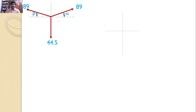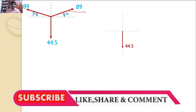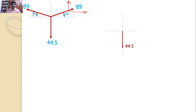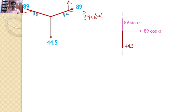You can also solve the same problem using the method of resolution. The 44.5 Newton force acts downward. The 89 Newton force making angle alpha with the x-axis has horizontal component 89·cos(alpha) and vertical component 89·sin(alpha). Similarly, the other 89 Newton force making angle beta has horizontal component 89·cos(beta) and vertical component 89·sin(beta).